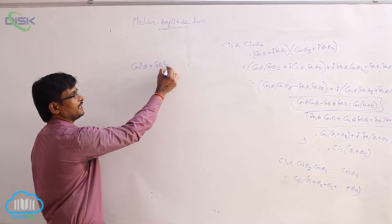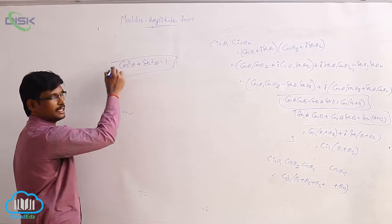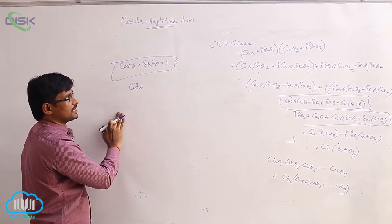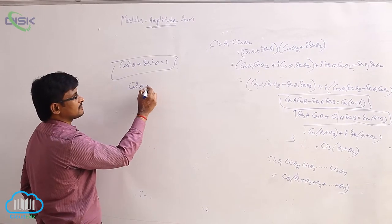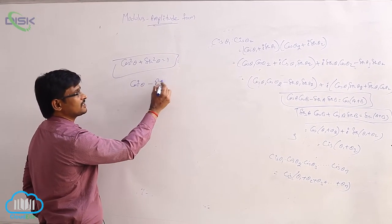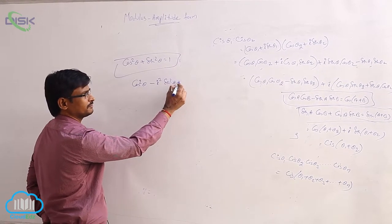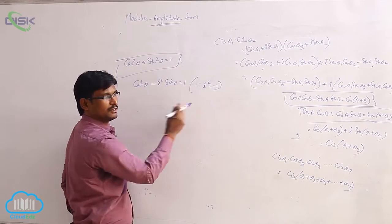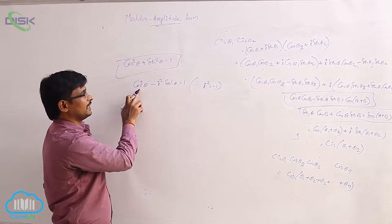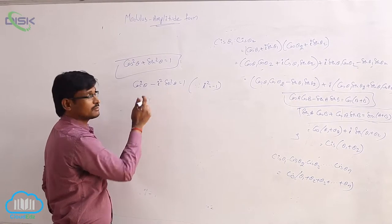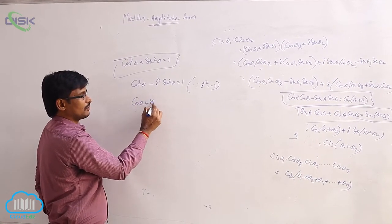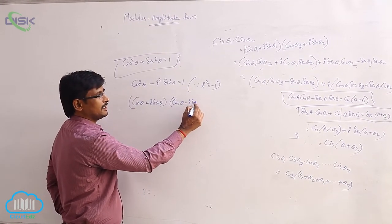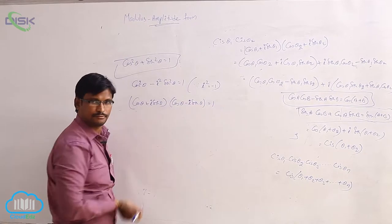cos²θ + sin²θ = 1. This is the first identity property in trigonometry. We can write cos²θ + sin²θ as cos²θ minus i²sin²θ, since i² = -1, so it becomes plus sin²θ. Now, clearly this is in the form of a² minus b², so we can write it as (cosθ + isinθ)(cosθ - isinθ) = 1.